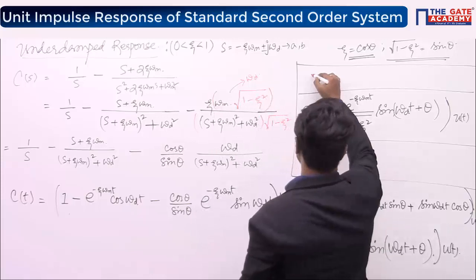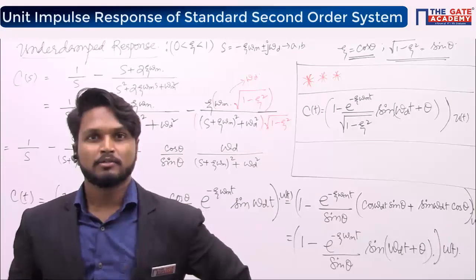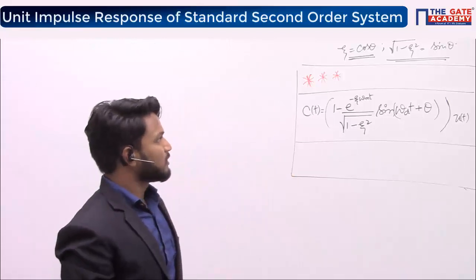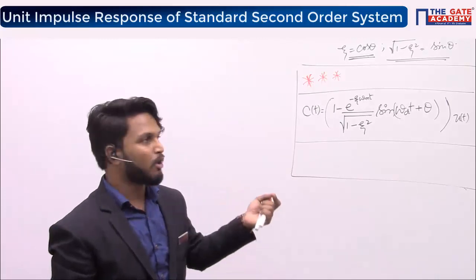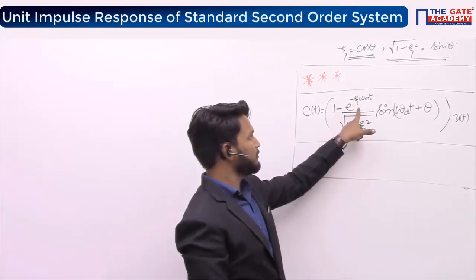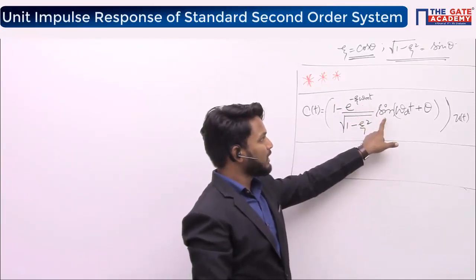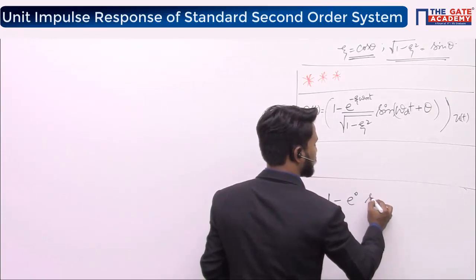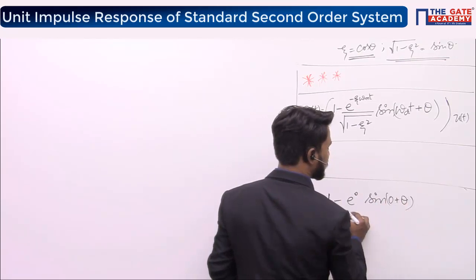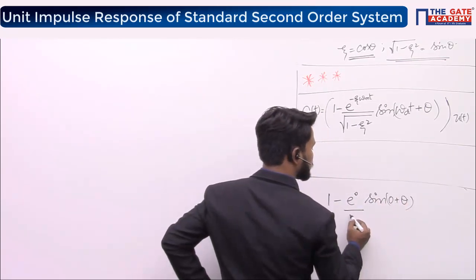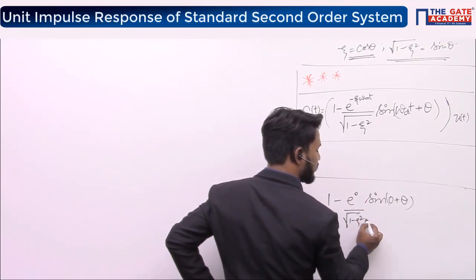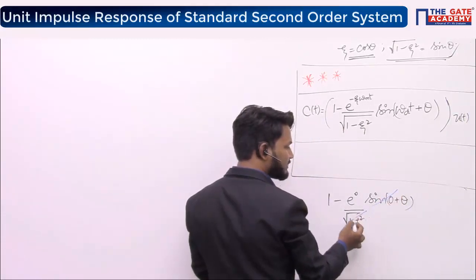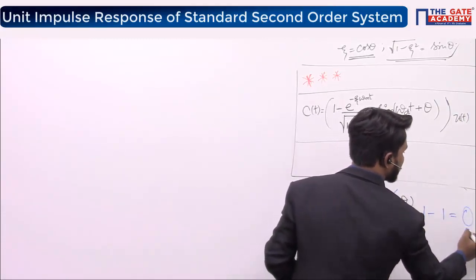At t = 0: e^0 = 1, and sin(0 + θ) = sin θ = √(1 − ζ²). So the expression becomes 1 − (1/√(1 − ζ²))·√(1 − ζ²) = 1 − 1 = 0. So the response starts at 0 at t = 0.